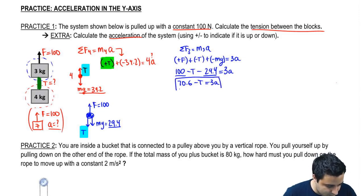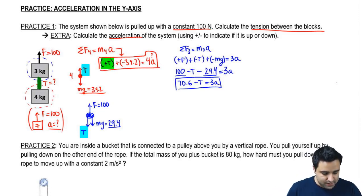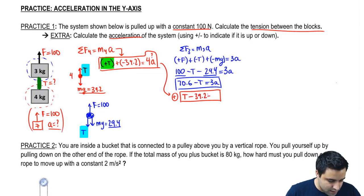This equation can't be solved by itself, just like how this equation couldn't be solved by itself. But I can combine them. I can stack them up and add them. So I'm going to do this. I have T minus 39.2 equals 4A.